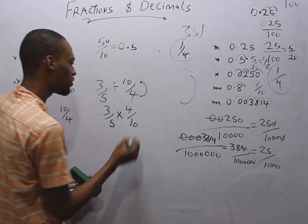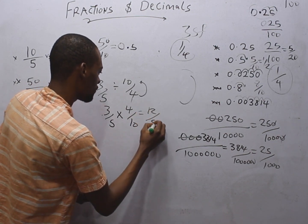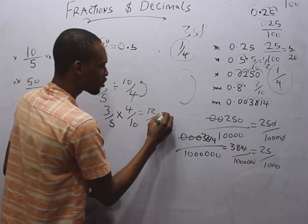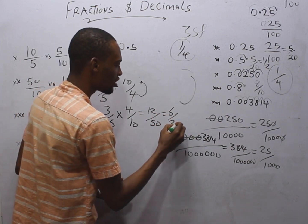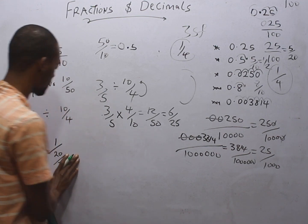So, 3 over 5 divided by 10 over 4 is the same thing as 3 over 5 times 4 over 10. Now, what does this give you? This is 12 over 50. So, 12 divided by 2 is 6. 50 divided by 2, that is 25.